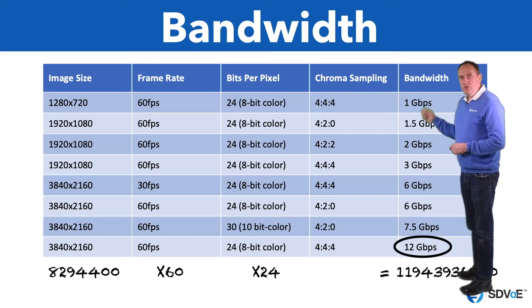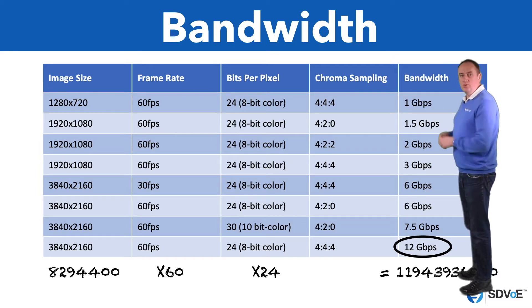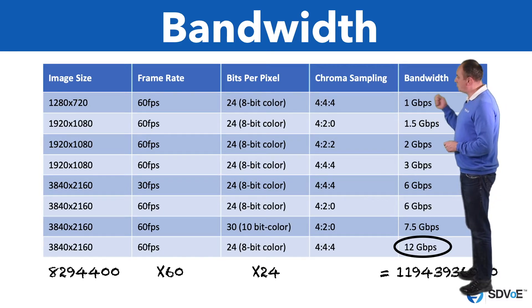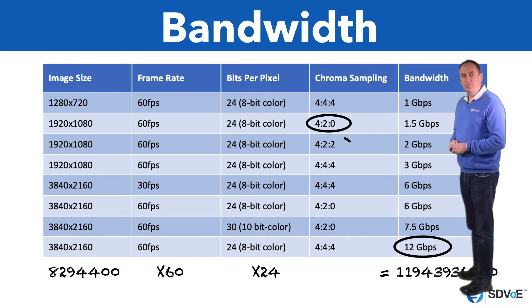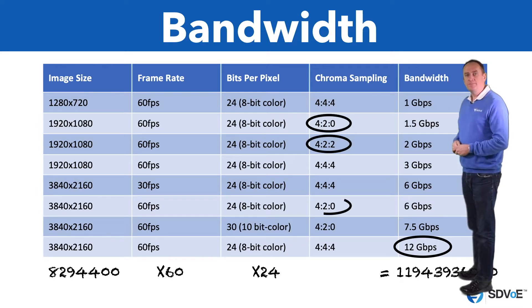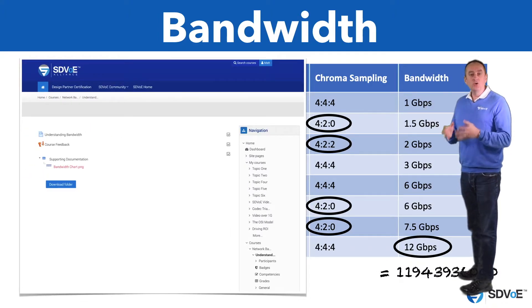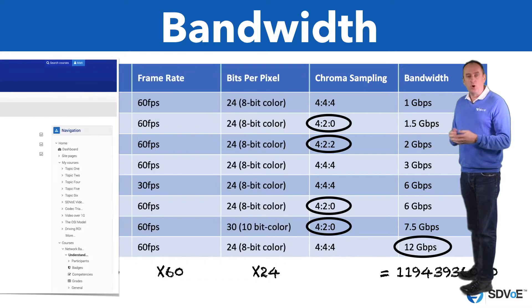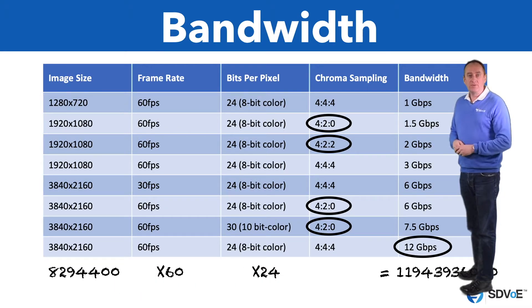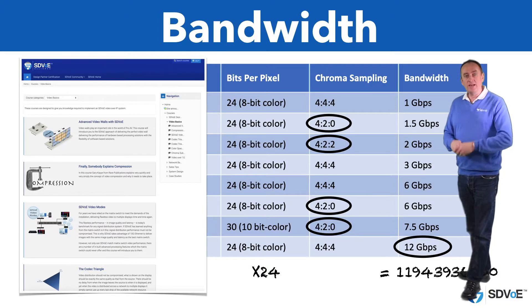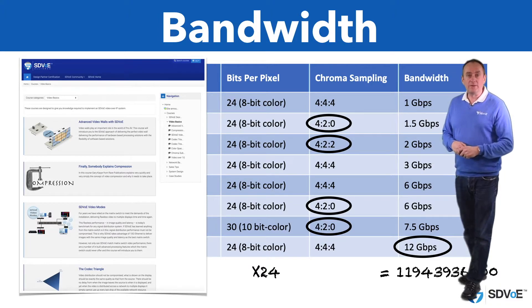This is a useful chart because it also gives you various bandwidth values for streams which have had chroma subsampling applied. You can download it within the documents section of this course for easy reference. And if you're unsure about chroma subsampling or color depth, head over to the Video Basics category here in Academy to learn all about it.